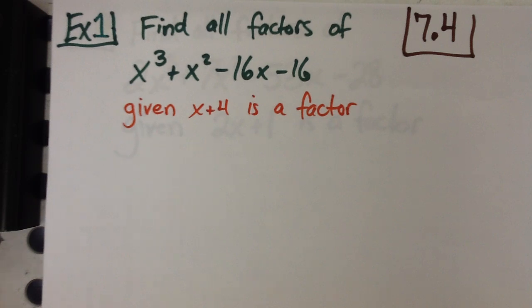7.4. The book calls this factor remainder theorem. We aren't exactly going to use that theorem. We're really just going to find all the factors of a polynomial.